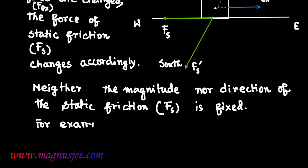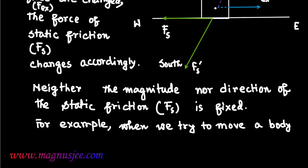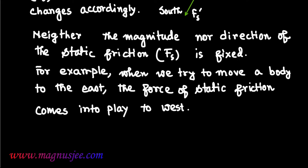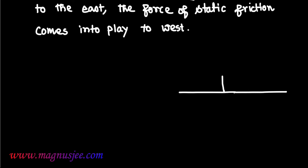For example, when we try to move a body to the east, the force of static friction Fs will act towards west. Static friction acts on the surface in contact between the body and the surface of another body, and Fs will be acting towards west.